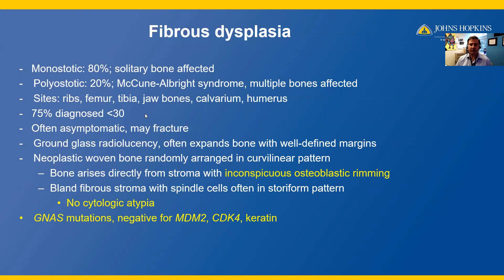The majority of cases are diagnosed in patients younger than age 30. However, 25% of cases are diagnosed in adults, so you have to keep that in mind as well. Fibrous dysplasia is often asymptomatic; however, the bone may fracture. Radiographically, we'll see a ground glass radiolucency that often expands the bone with these well-defined sclerotic margins.